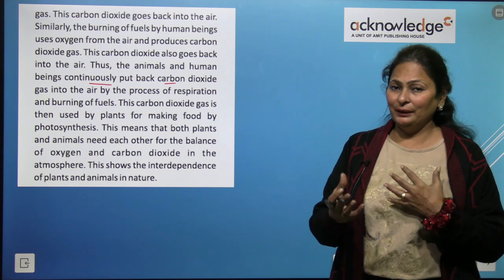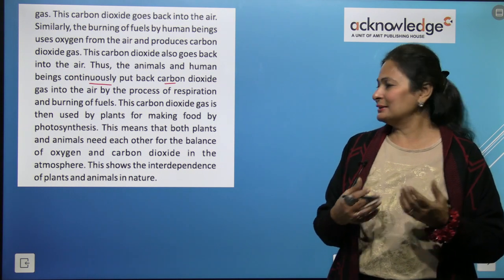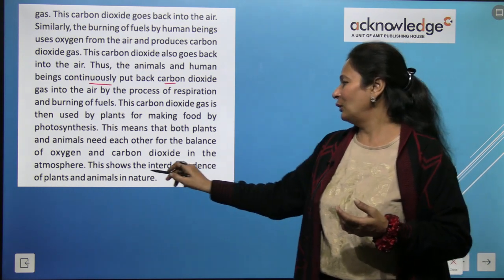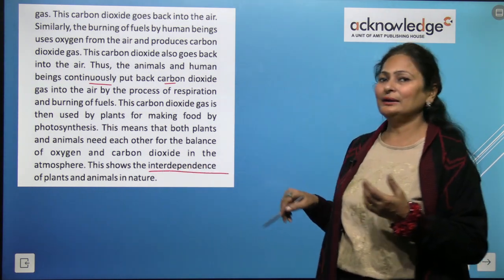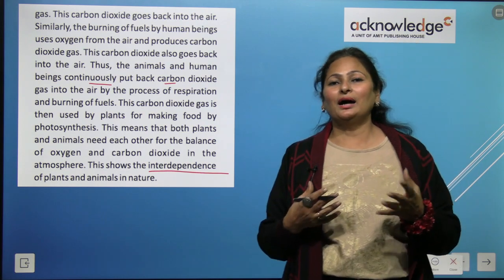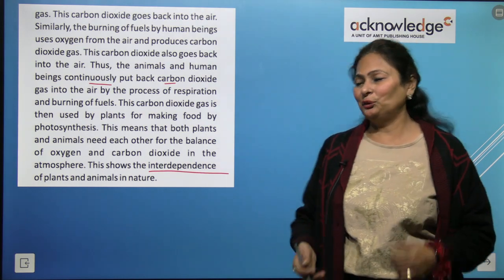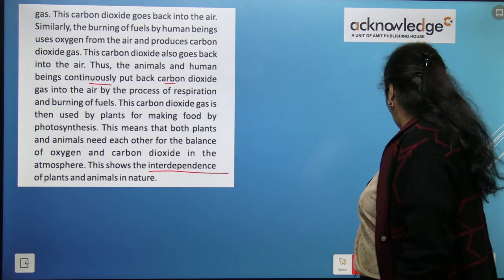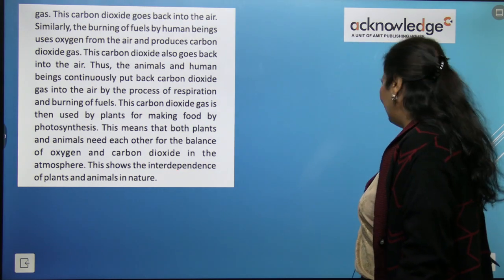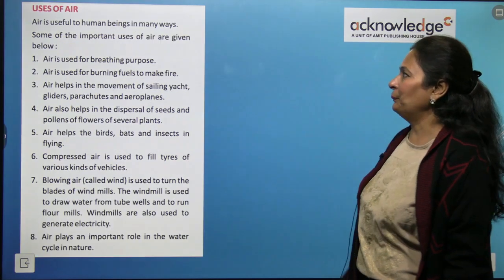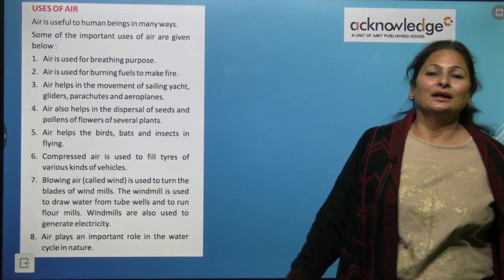The carbon dioxide from respiration and burning is used by plants during photosynthesis, which releases oxygen back into the environment. So plants, animals, and humans are dependent on each other — this is called interdependence.